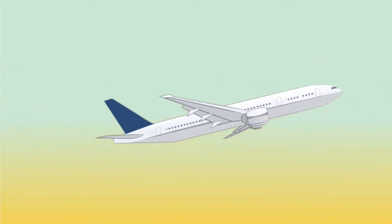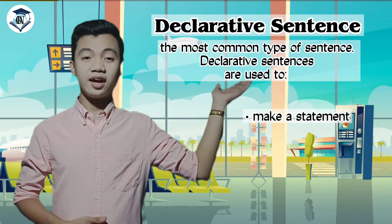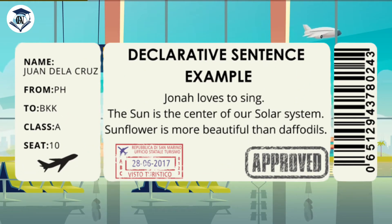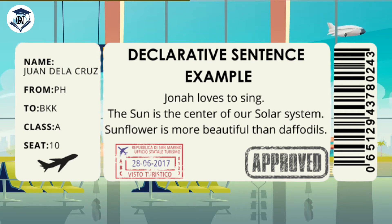Now, let us go to our first destination: declarative sentence. It is the most common type of sentence, and it is used to make a statement, express opinion, provide justification, and facts. For example, 'Jonah loves to sing' — that is an example of a statement. Next, 'Sunflower is more beautiful than daffodils' — this is an example of expressing an opinion. And 'The sun is the center of our solar system' — this sentence serves as a fact-providing sentence. Take note that the declarative sentence ends with a period and is usually a plain sentence.